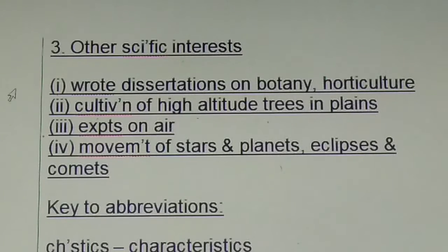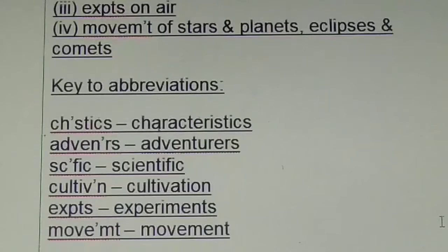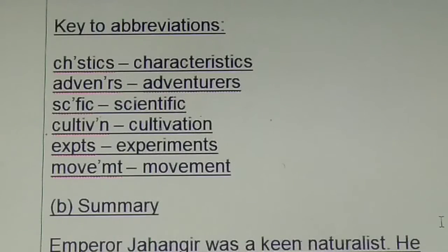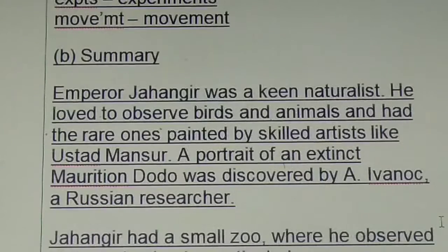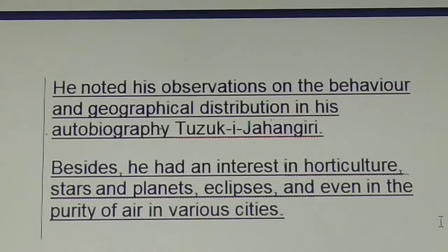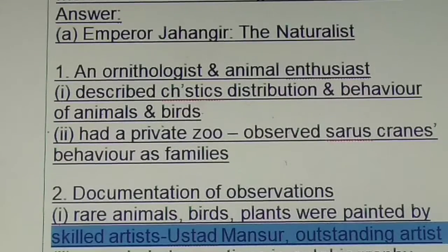Then point number three: other scientific interests — 'scientific' is abbreviated, children. Can you see that? In the second point of the third one, see how 'cultivation' is abbreviated, 'experiments' is abbreviated, 'movement' is abbreviated. So you should also do it in the same way. Learn. Then key to abbreviations — see: characteristics, adventurous, scientific, cultivation, experiments, movement — see how the words are abbreviated. At least four to five abbreviations are required.